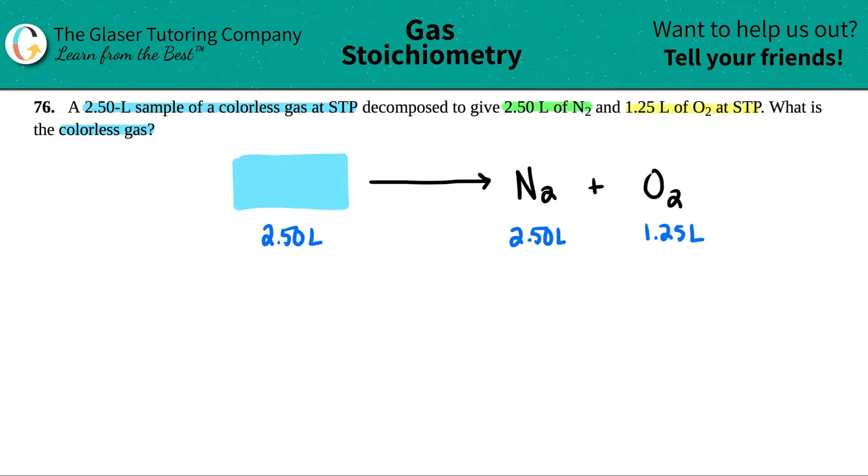So now let's see what is the colorless gas. Well, remember, whatever the elements are over here has to be in this gas. So since I have two elements, nitrogen and oxygen, I know that my compound has to consist of nitrogen and oxygen. But I don't know what these values are. So maybe I'll label them as X and Y. Now let's look at the liters.